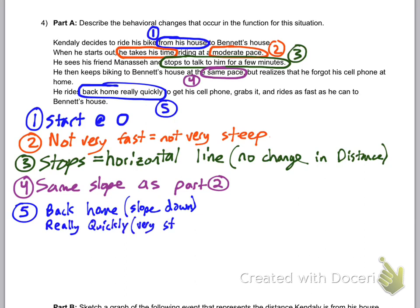And then, he said really quickly, that means it needs to be very steep. So you need to do both of those things. It needs to slope down. Part five needs to slope down and needs to be very steep.